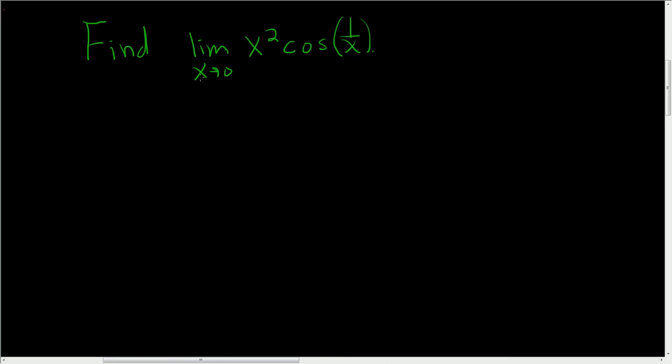In this problem we're going to find the limit as x approaches 0 of x squared times the cosine of 1 over x. So we will use the squeeze theorem.